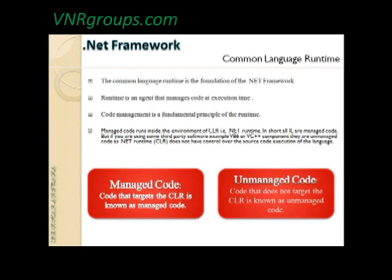CLR is a runtime just like other programs have their own runtimes. For example, VB6, C, and C++ all have their own runtime libraries. Here comes another two important aspects: managed code and unmanaged code. A managed code is code that targets the CLR — whatever CLR can understand and run in its own domain is called managed code.